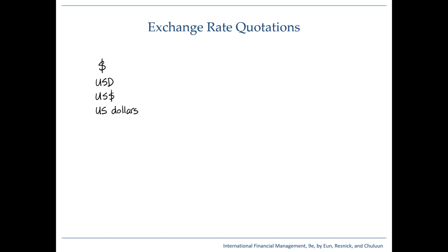Going back to exchange rate, exchange rate is simply a price of one currency in terms of another. So suppose we're talking about the exchange rate between pound and US dollar. Let's say the exchange rate is such that one pound today is worth or equivalent to 1.3 US dollars. We can write it as such, or we can write it in other ways, or it could be expressed the other way around.